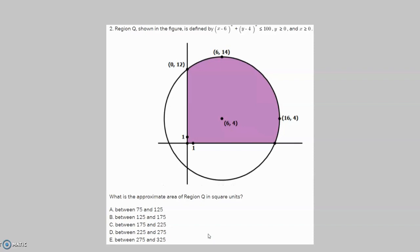The problem reads: region Q shown in the figure is defined by (x minus 6) squared plus (y minus 4) squared is less than or equal to 100, with y greater than or equal to 0 and x greater than or equal to 0. What is the approximate area of region Q in square units?